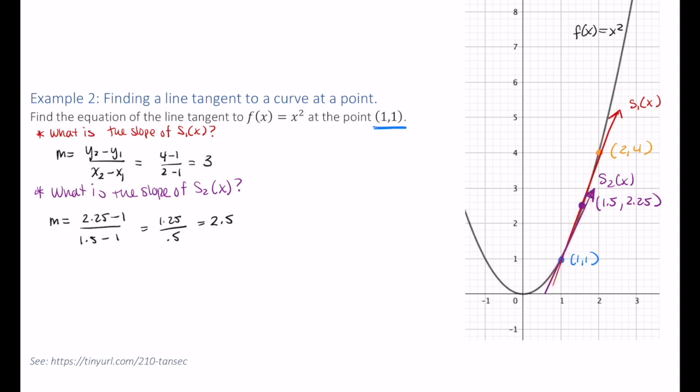Now let's try a point that's a little bit closer here. Take a moment and let's say use the point (1.1, 1.21). I'm going to sketch that in using green. So take a moment and find the slope of this small secant line right here.